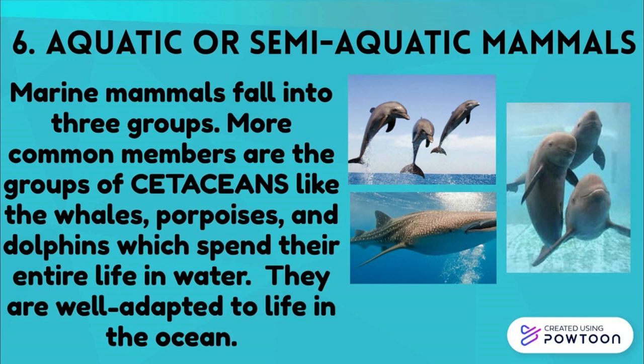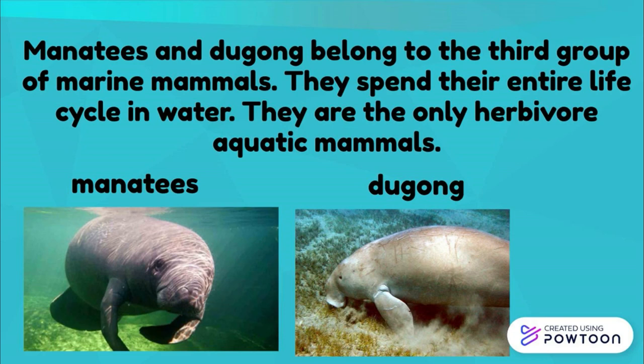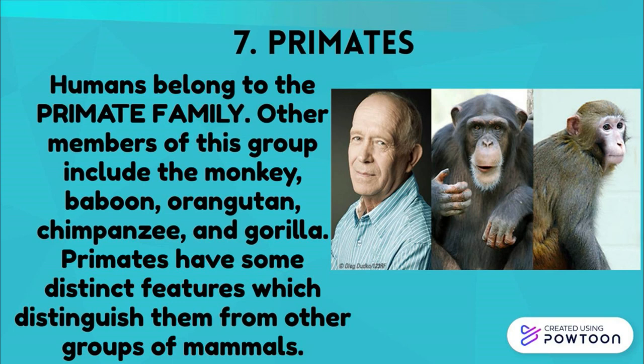Aquatic or semi-aquatic mammals fall into three groups. The more common group includes cetaceans like whales, porpoises, and dolphins, which spend their entire life in the water and are well-adapted to life in the ocean. Other aquatic mammals include seals, sea lions, and walruses, which spend part of their life cycle in a terrestrial habitat. Manatees and dugongs belong to the third group and spend their entire life cycle in water — they are the only herbivorous aquatic mammals.